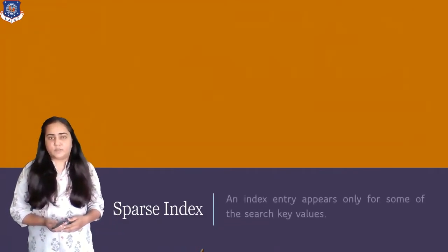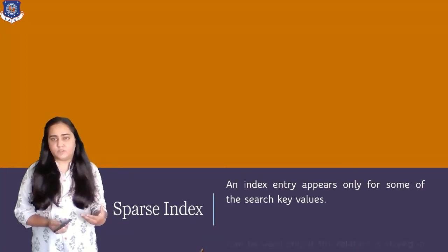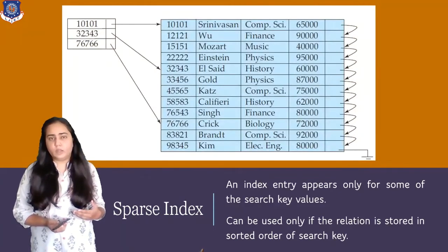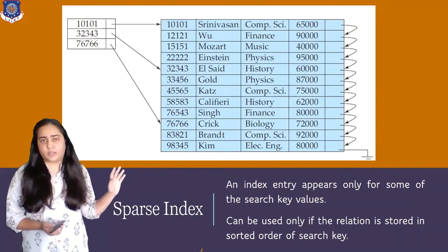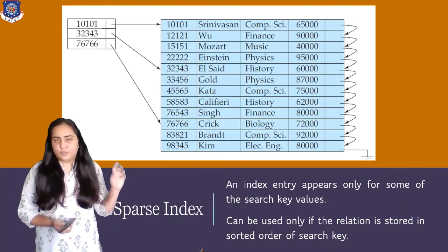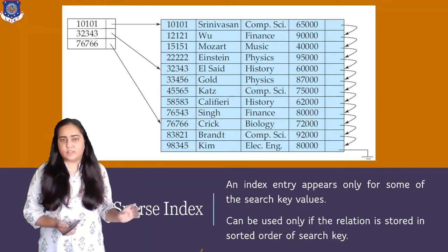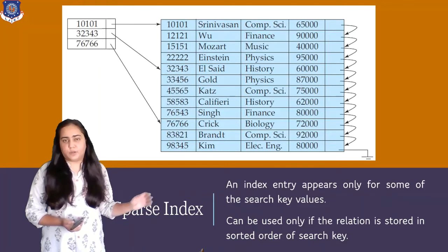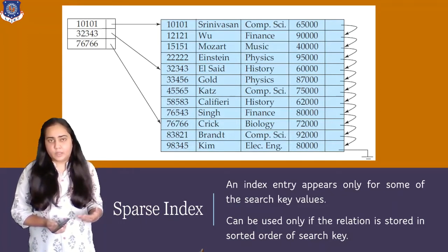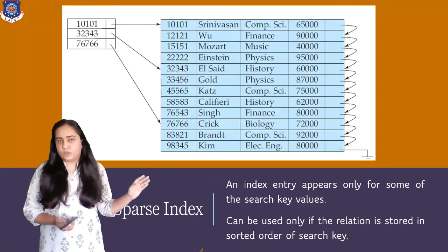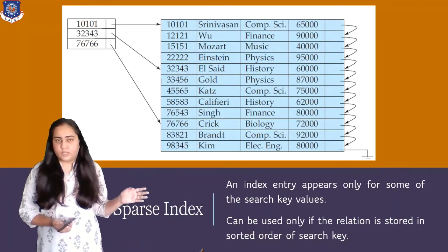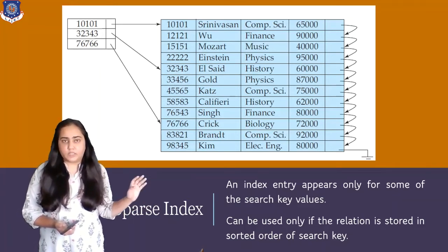The third type is a sparse index, where an index entry appears only for some of the search key values, not all. It can only be used if the relation is stored in sorted order of the search key. For example, I can build a sparse index on ID because the relation is stored in sorted order of ID — the names, departments, and salaries are not sorted, but the IDs are.